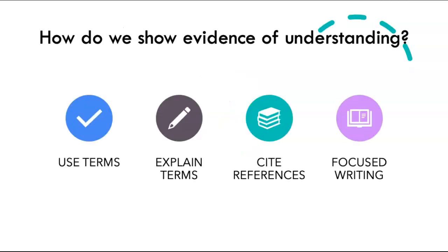The way you determine if you're showing evidence of understanding is through these steps. First, use developmental terms. You want to make sure that you are using developmental terms. Some examples are cognitive development, Piaget's theory of cognitive development, temperament, attachment, emotion regulation, and developmental milestones. Those are developmental terms, so you want to make sure that you're using them.